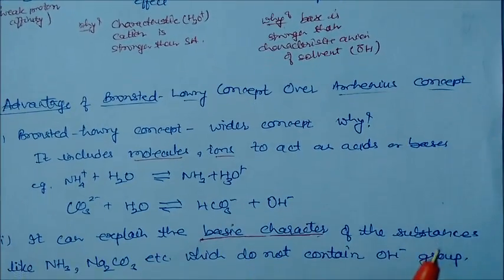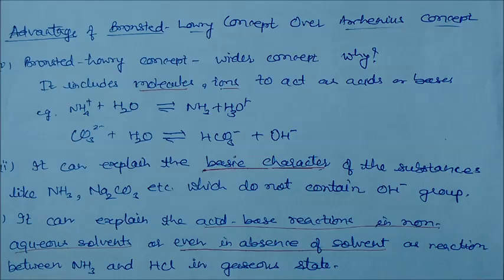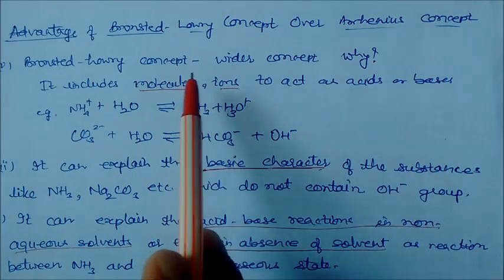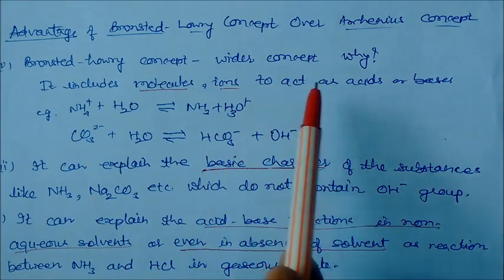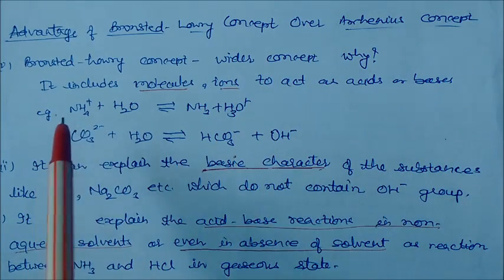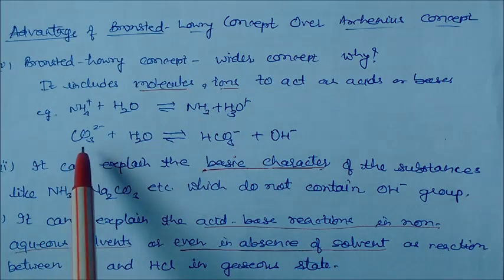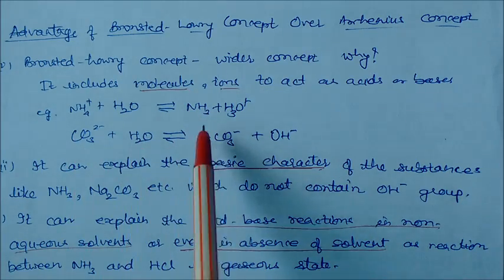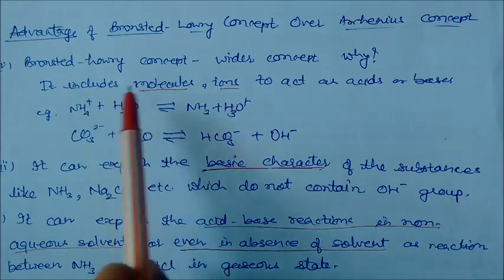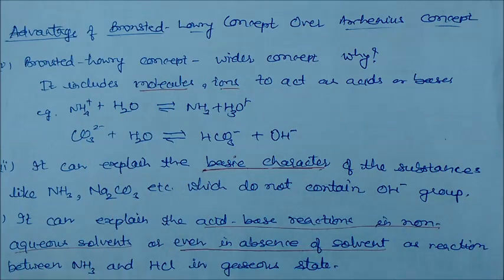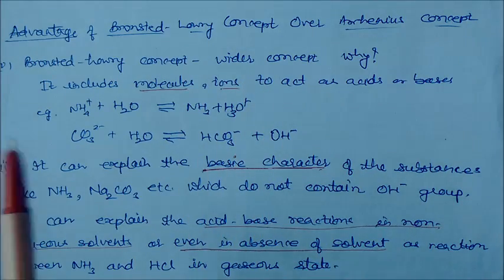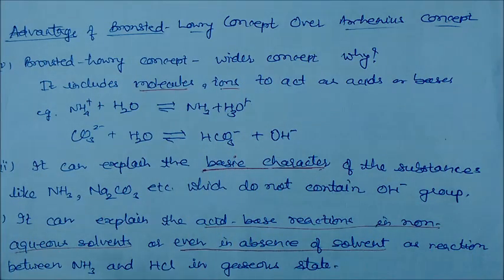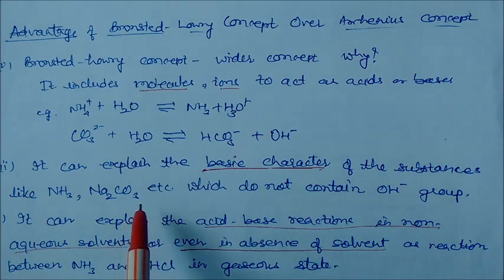Now we will see the advantages of Bronsted-Lowry concept over the Arrhenius concept. Bronsted-Lowry is a broader concept. First, it includes molecules or ions to act as acids or bases — cations and anions can both react with water. It also includes molecules, as seen in the autoprotolysis of water. Second, it can explain the basic character of substances like ammonia, sodium carbonate, etc.